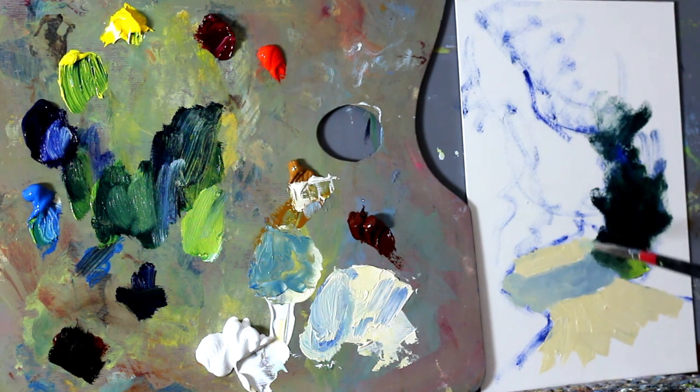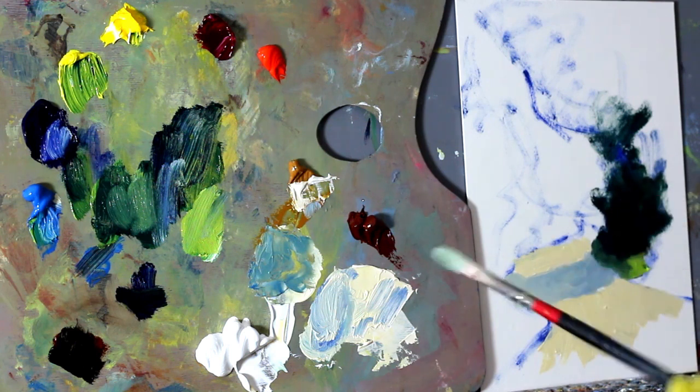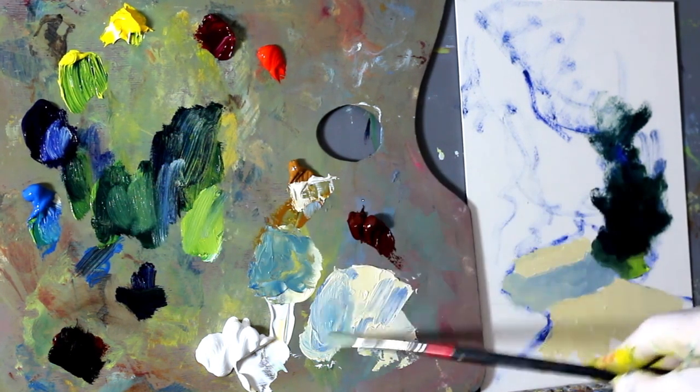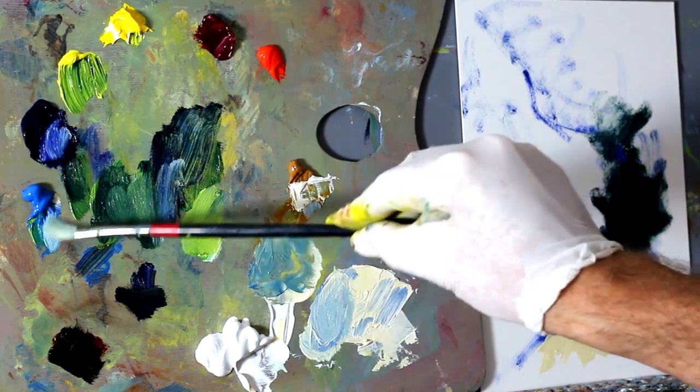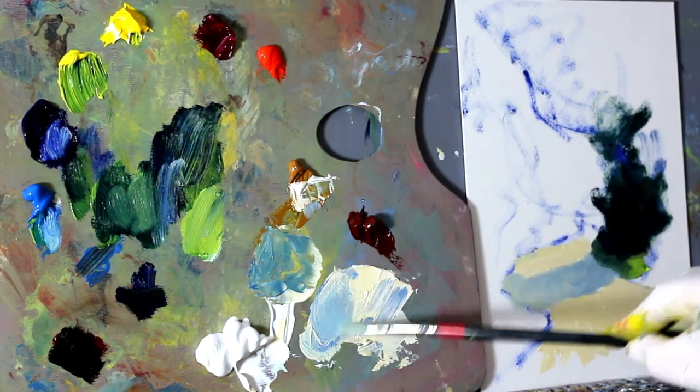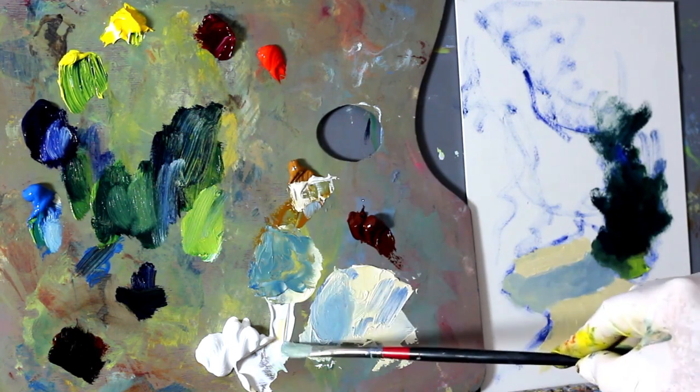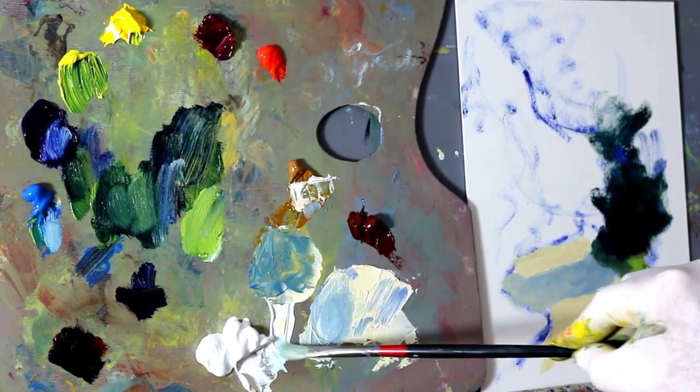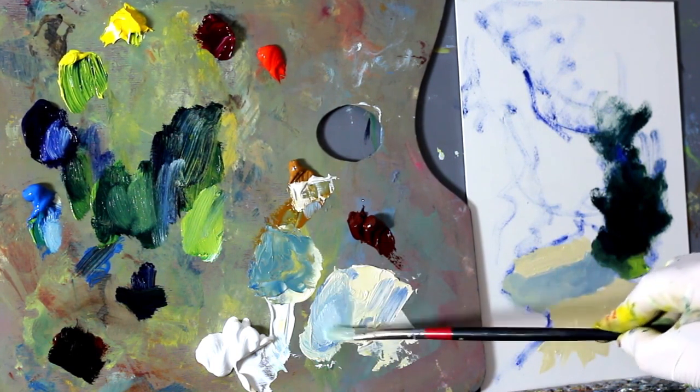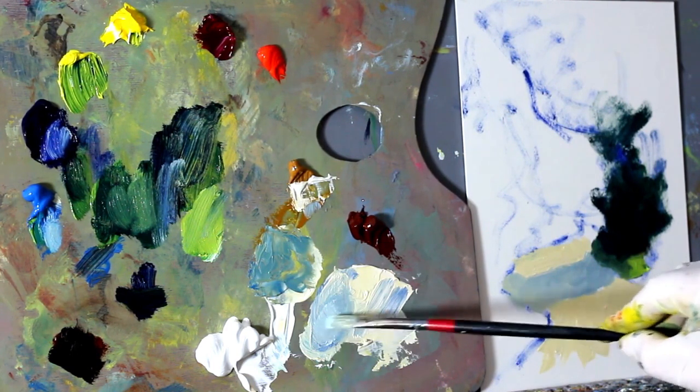Now as shadows head off into the distance, they will also be affected by aerial perspective, which as we know makes edges softer and colors get cooler and makes values also lighter with distance.